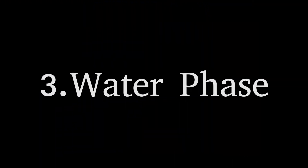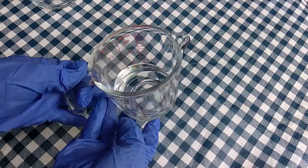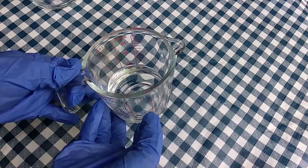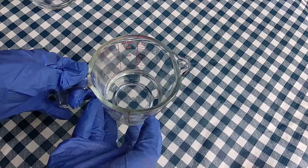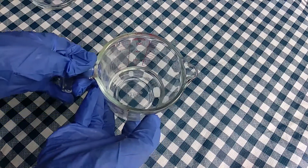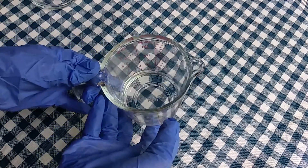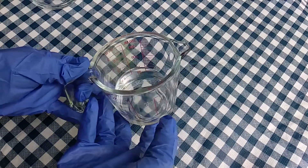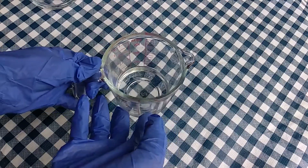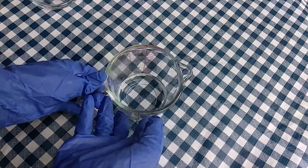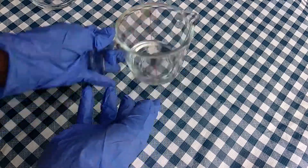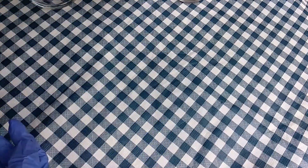For the water phase I already mixed glycerin, distilled water, and cetrimonium chloride. Cetrimonium chloride is a conditioning agent and is mainly used to prevent static and buildup in hair.